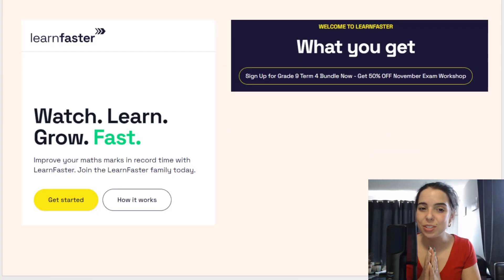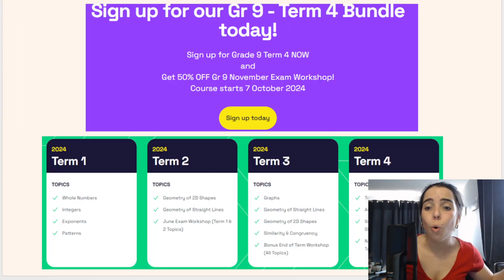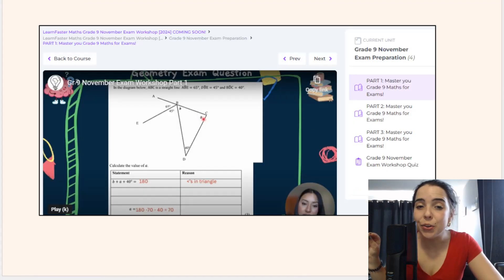Before we jump in I just want to tell you about this amazing platform called Learn Faster. So it's an online platform, you pay a subscription fee and what you get is access to not only term four content, so term four topics, but November exam workshops where they go through topics from term one all the way through to term four. So Learn Faster includes the different topics and they include videos on the different topics that takes you through the topic, through the important things that you need to know.